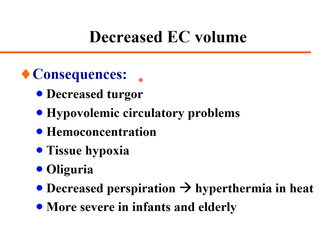Consequences of extracellular volume loss include decreased skin turgor, hypovolemic circulatory problems activating regulatory systems to increase blood pressure and peripheral vasoconstriction with increased GFR. Hemoconcentration occurs with increased peripheral resistance, microcirculation alterations, tissue hypoxia, oliguria, and decreased perspiration that can lead to hyperthermia in heated environments.